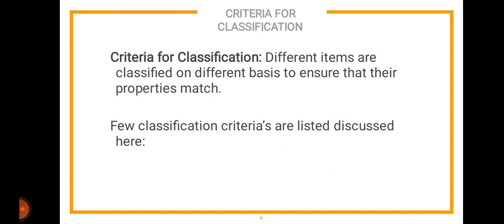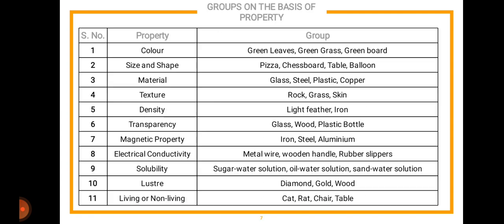Different items are classified on different bases to ensure that their properties match — there should be one similarity between two products. For example, a brown bottle and a green bottle: from a color perspective they will not match, but because they are both made of plastic, they fall in the same group. The property here is the material — plastic.